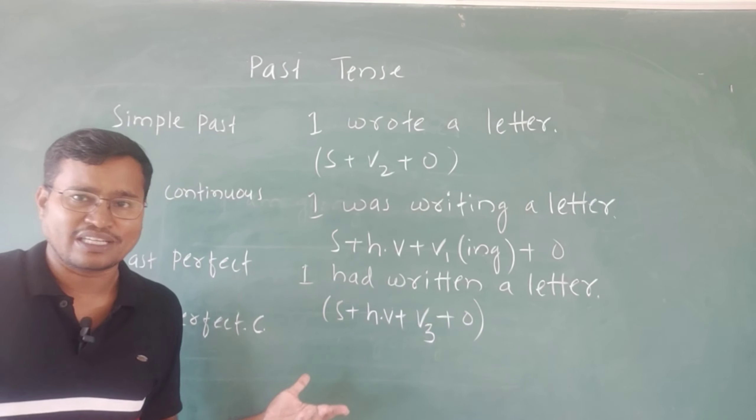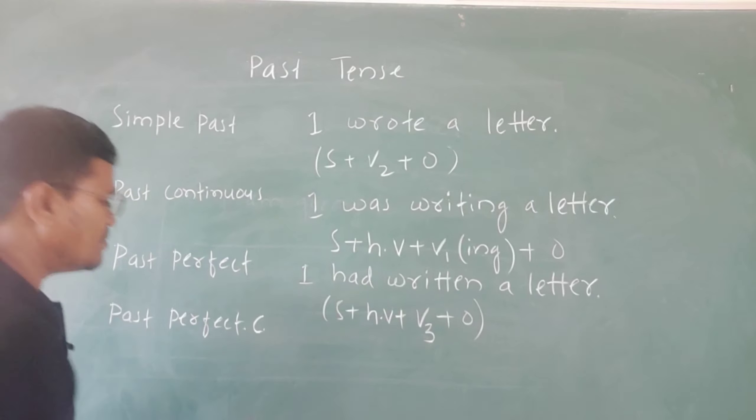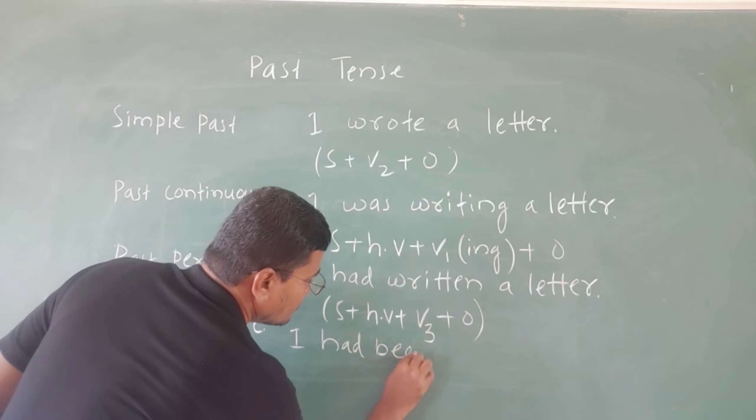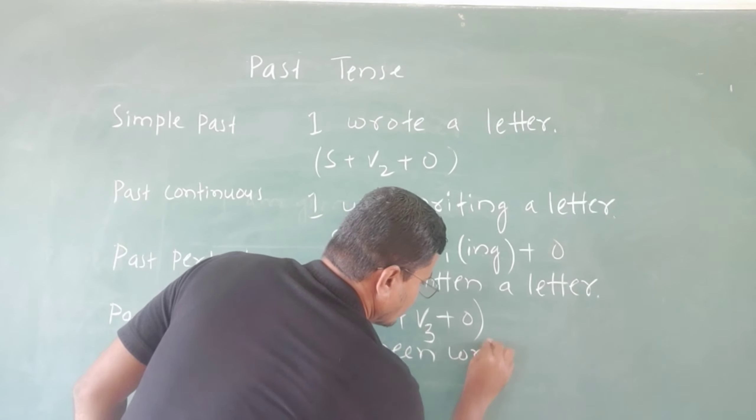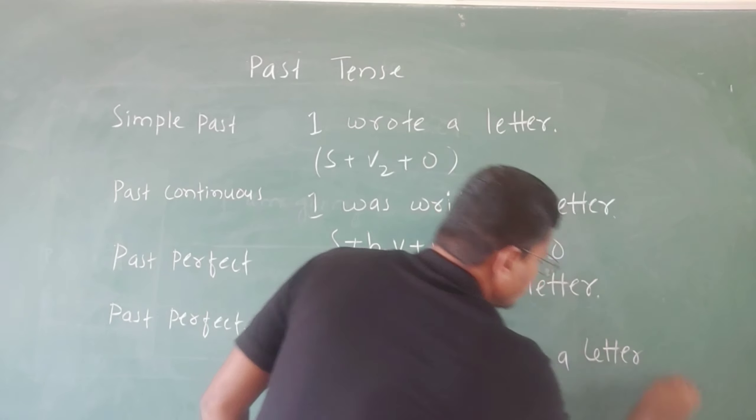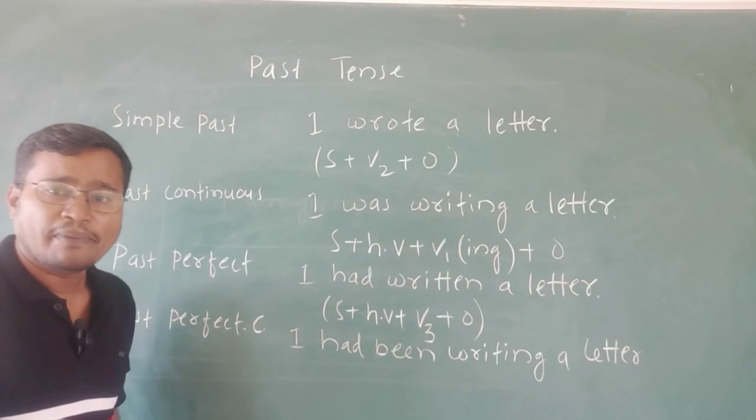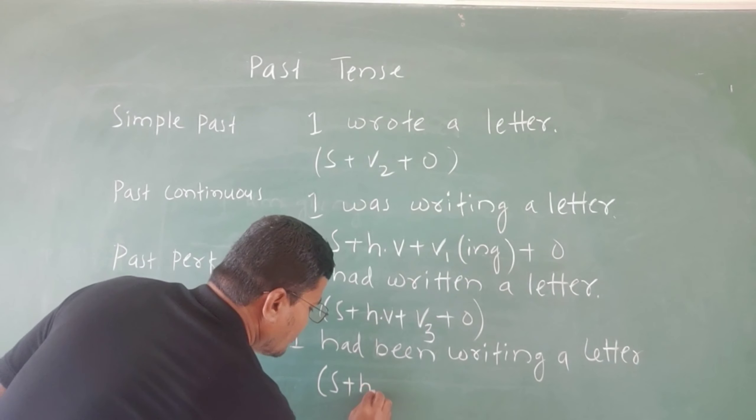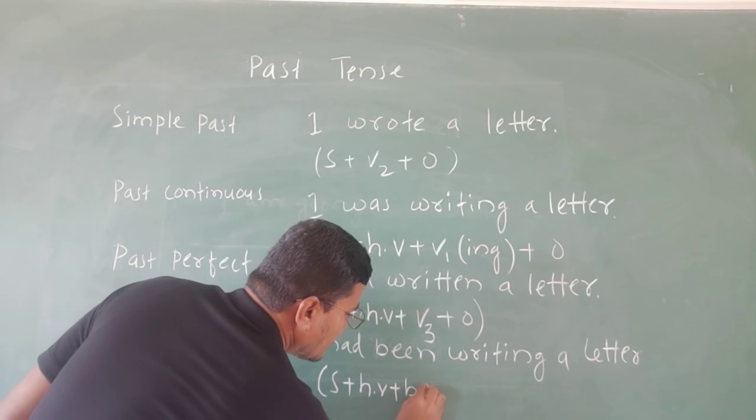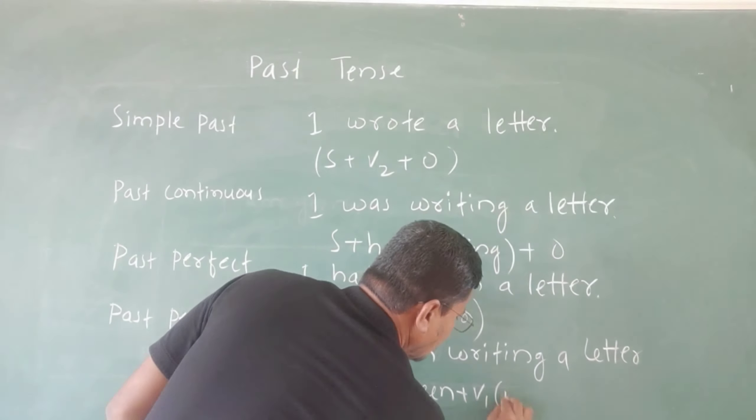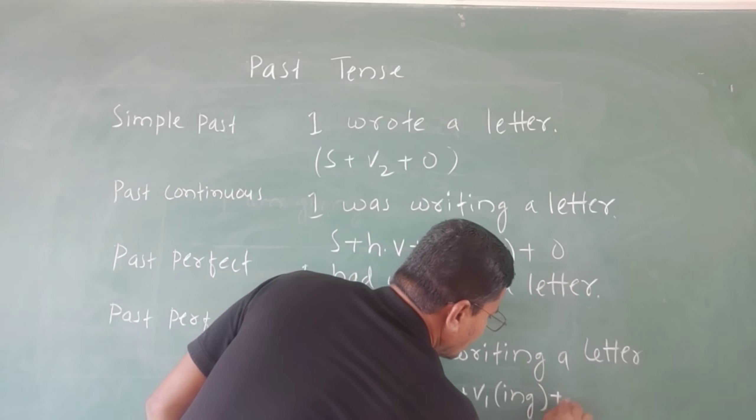The last one is 'I had been writing a letter' - past perfect continuous. The formula is subject plus helping verb plus being, then afterwards V1 including ing, and finally the object.